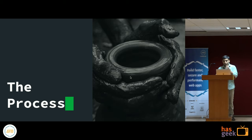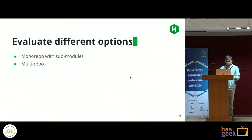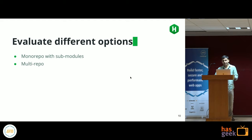We knew we had to move away from the monolithic app, so the first thing we did was evaluate our options. We first thought about using submodules within the existing monorepo, but it solved only some problems. Different parts of a product have different build pipelines — modules and products have to be built and deployed differently, and a monorepo doesn't solve that very well.